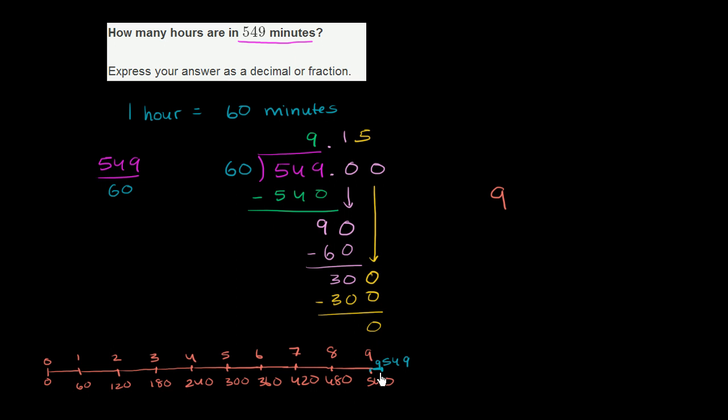Well, 60 minutes is a whole hour. So 9 minutes is 9/60ths of an hour. So you could write it this way. It's 9 and 9/60ths hours. Or we could write this as an equivalent fraction. 9 over 60 is the same thing if we divide the numerator and the denominator by 3. It's the same thing as 3/20ths. So we could write this as 9 and 3/20ths.